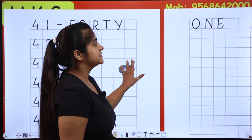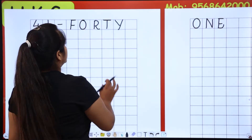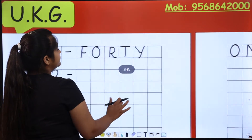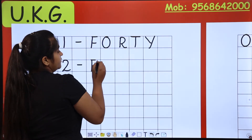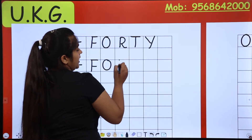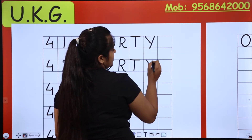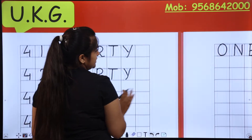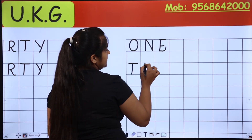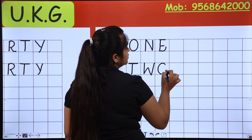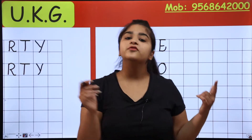Now, what are we going to do? 42. 40 is FORTY, and then T-W-O. So 42 is FORTY-TWO.